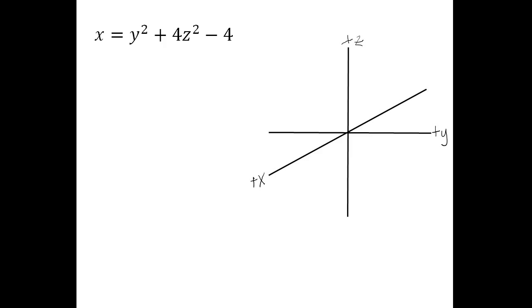We're going to start graphing this by doing the traces in each of the coordinate planes. Since the y and z-axes are in the surface of the paper, that's probably the easiest one to do first.